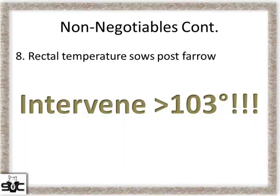Number eight: take rectal temps on sows post-farrow. An intervention on this doesn't have to be an antibiotic — it can be an NSAID, getting her up, walking her, anything you're comfortable with on your farm.